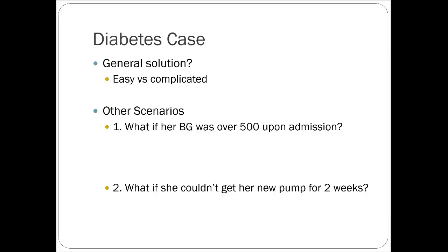The general approach is easy versus complicated. The complicated route would be calculating her basal percentage and giving glargine (Lantus) plus mealtime insulin — but that's tricky since she only needs it for about a day and there's cost to consider. We ended up just giving her an injection of Lantus in the ER and discharging her with a Lantus pen for the next day, since her sugars were in range and she had already eaten her last meal.